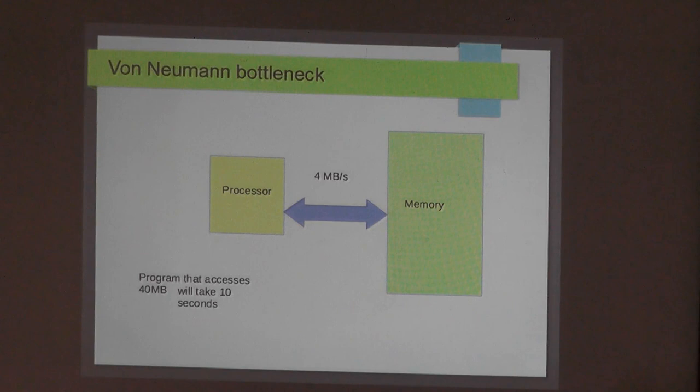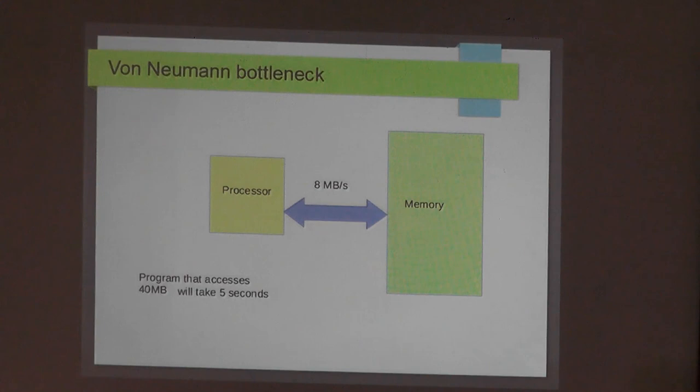If instead you had a different processor and memory system that accesses at 8 megabytes per second, the same program runs in 5 seconds — the machine is twice as fast without knowing any other detail.